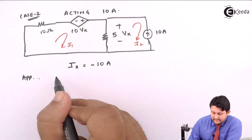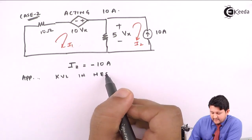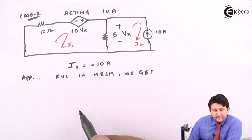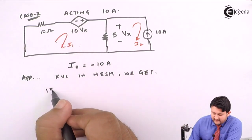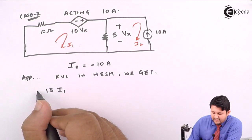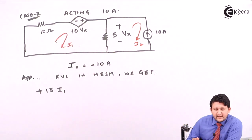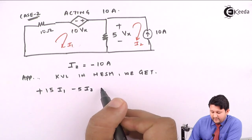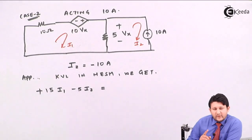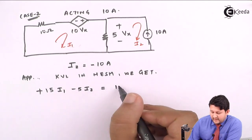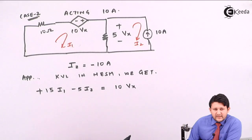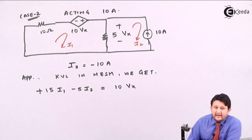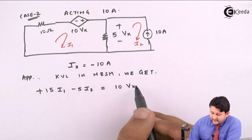Applying KVL in mesh 1: you see two resistances. The mesh current I1 is positive. In the 5Ω resistor, I2 also flows, but in the opposite direction, so its contribution is −5I2. After the equals sign, there is the dependent voltage source 10Vx. The equation requires an expression for Vx in terms of I1 and I2.